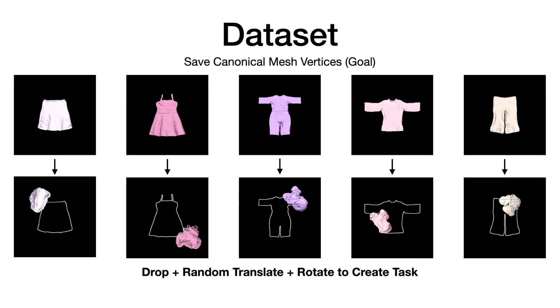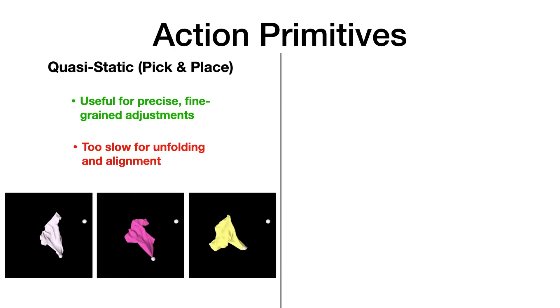Since we only need canonicalized cloth meshes to generate our training data, our method can work with many cloth categories. To get the cloth from this crumpled state to a canonicalized aligned state, both efficiently and precisely, we need to find the appropriate action primitives. Quasi-static actions, such as pick and place, are good at making small local adjustments, but they are too inefficient when starting from a crumpled state.